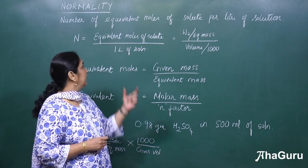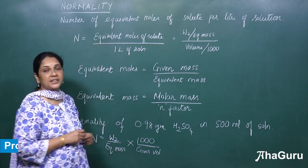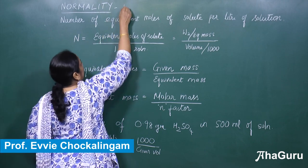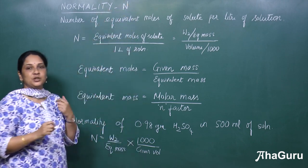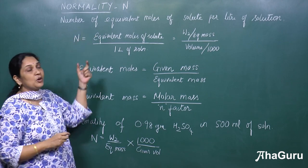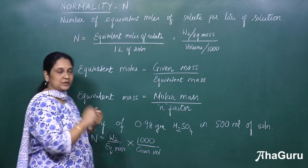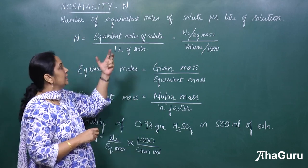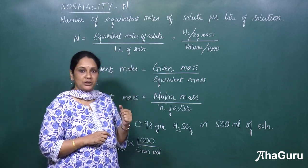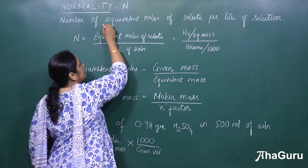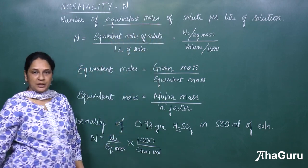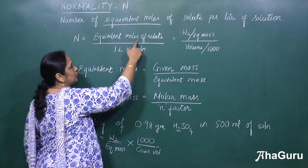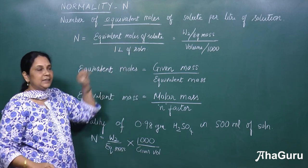Next, we will see the next concentration term, which is called normality, denoted by capital N. Normality is the number of equivalent moles of the solute per liter of solution — just like molarity, this is also per liter of solution, but here we take the equivalent moles of the solute. So normality N is given by the equivalent moles of solute per liter of the solution.